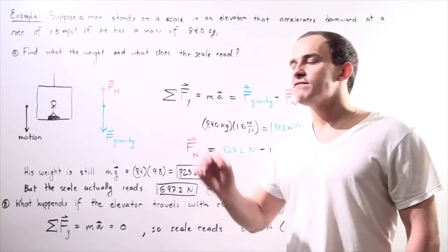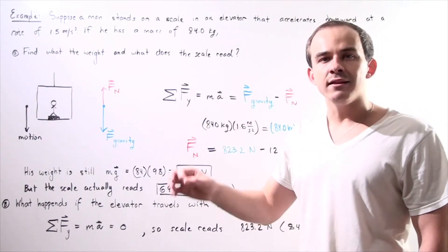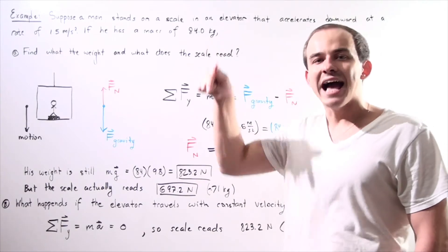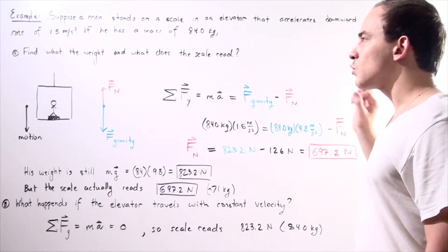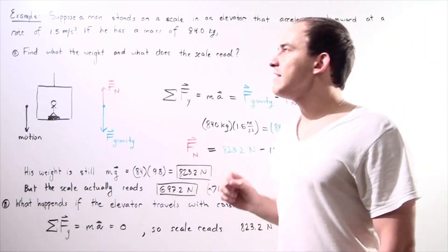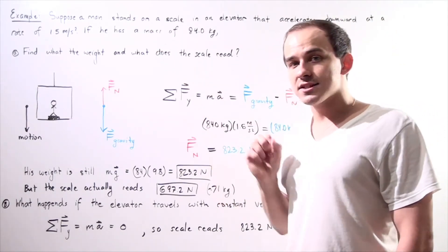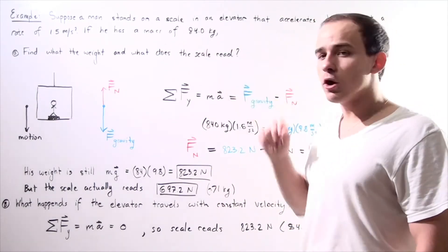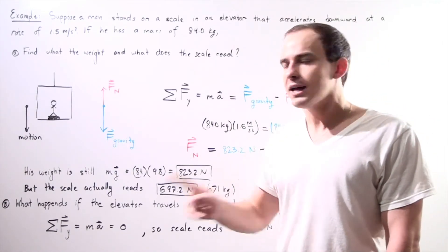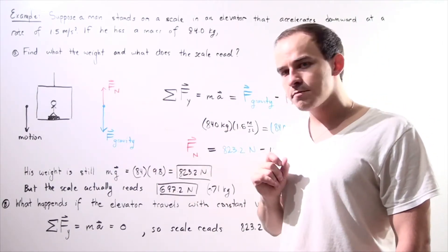Let's suppose that we have a man standing on a scale in an elevator moving downward with an acceleration of 1.5 meters per second squared. Assuming the mass of the person is 84.0 kilograms, find part A and part B.